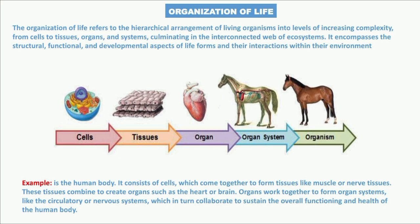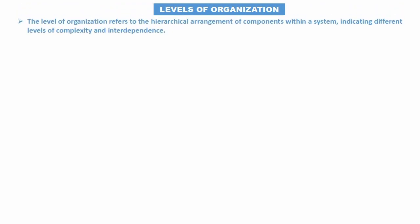The initial step goes from cells up to organs or systems. The level of organization refers to the hierarchical arrangement of components within a system, indicating different levels of complexity and interdependence. In the context of biology, it represents how living organisms are structured and organized.